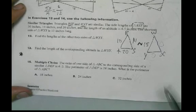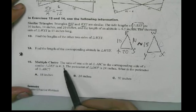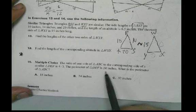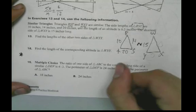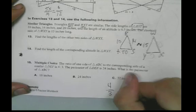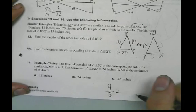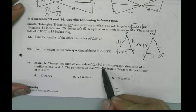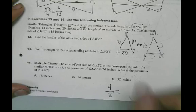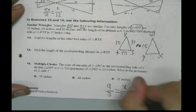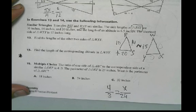All right. Down here, multiple choice. Draw a picture. 4 to 3. We know DEF, the perimeters, are 24. Well, I can even just do that right now. 4 divided by 3 equals... Well, which one's 4? ABC to DEF. So that means that we're going to have X over 24. And you can find out X right there.